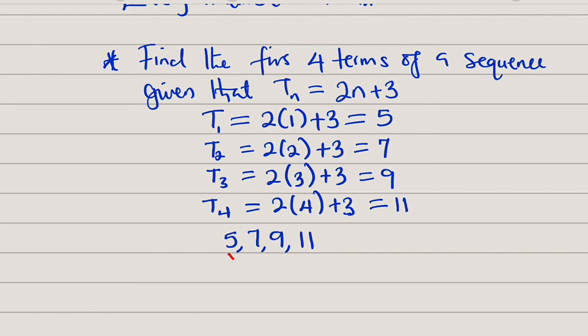You can see that from 5 to 7, we need to add 2. From 7 to 9, we also need to add 2. From 9 to 11, we need to add 2. If this is true, from 11 to the next one, if you add 2, you shall obtain that subsequent term.